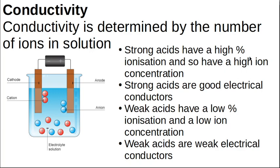Conductivity depends on how many ions you have in solution. Acids which ionize completely have a very high proton concentration, so strong acids easily conduct electricity because there are lots of ions to move and complete the circuit. However, if you're a weak acid, when you try to electrolyze it nothing happens because there are no ions to move from cathode to anode. So weak acids are weak electrical conductors — conductivity is a measure of acid strength.